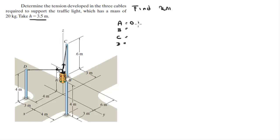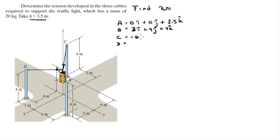Point A sits at 0i + 0j + 3.5k. Point B is at 3i + 4j + 4k. Point C is at -6i - 3j + 6k. And point D is at 4i - 3j + 4k.